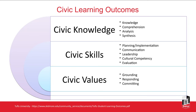The three categories are: civic knowledge, which covers knowledge, comprehension, analysis and synthesis; civic skills, which involves planning or implementation, communication, leadership, cultural competency and evaluation; and civic values, which covers grounding, responding and committing.